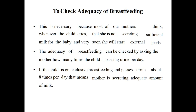To check adequacy of breastfeeding: signs that the child is getting adequate breast milk include proper weight gain, and passing urine about eight times per day. If the baby is passing urine only two or three times a day, breastfeeding is inadequate. After feeding, the baby should be relaxed — either sleeping or at least not crying. If the baby is continuously crying and restless even after a feed, breastfeeding is inadequate.